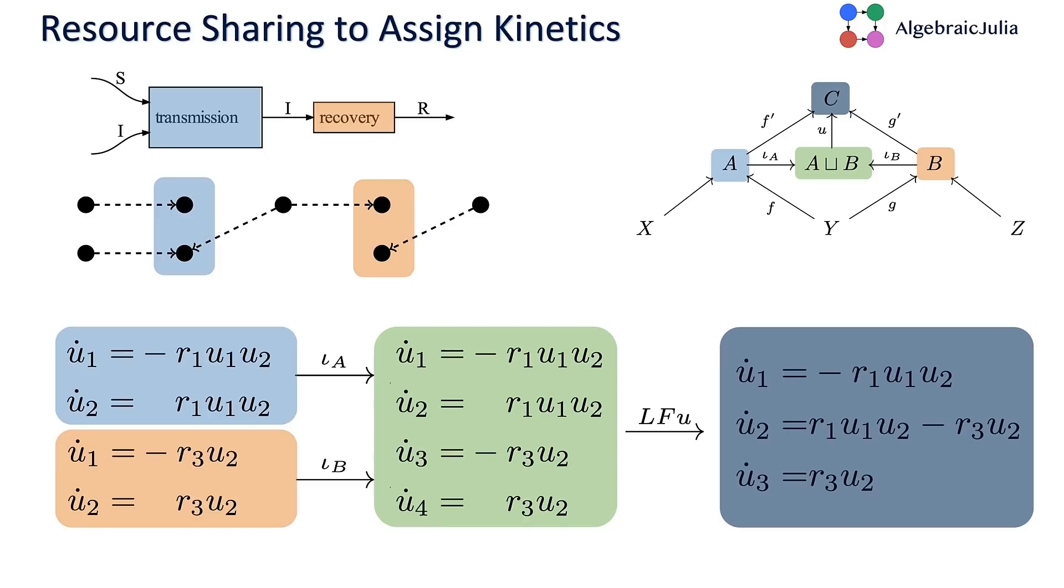You can use exactly the same framework to glue dynamical systems together to get complex dynamical systems out of simple dynamical systems. Here we have a model of transmission and a model of recovery. We take the disjoint union, which here is the direct sum, so we get a system of four variables. Then we say that variable two and variable three are supposed to be the same. We'll use a superposition principle and add the derivatives of those variables. That gives us this three variable system where the U dot two is the difference of two terms.